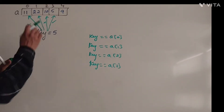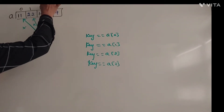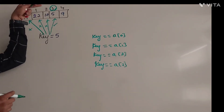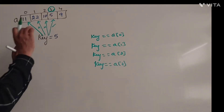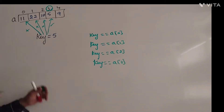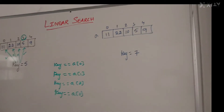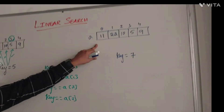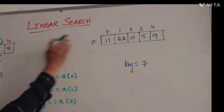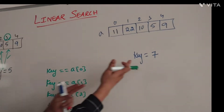We found the key element at position three, so we return the position where we found the key element — that is the main answer. Now let us take another example with the same elements but a different key element.